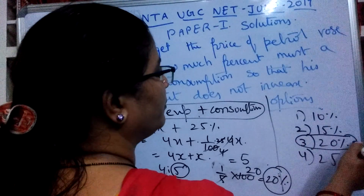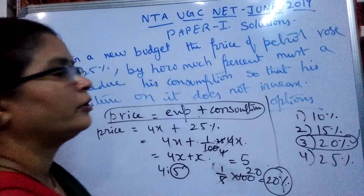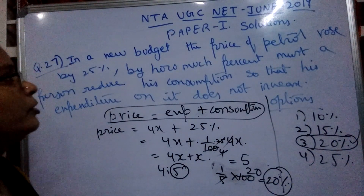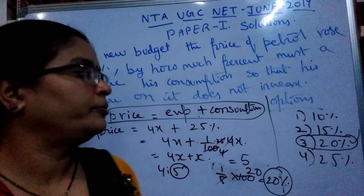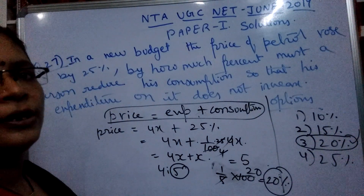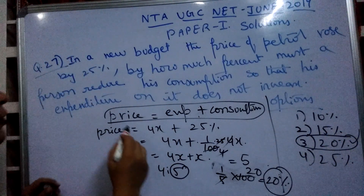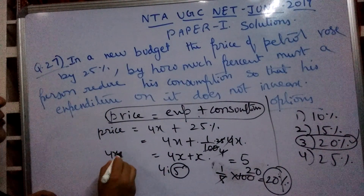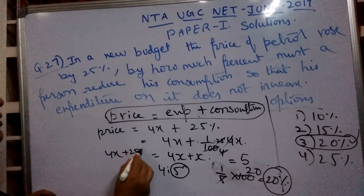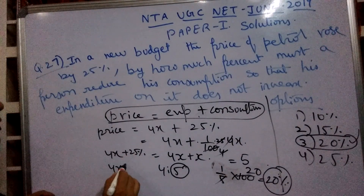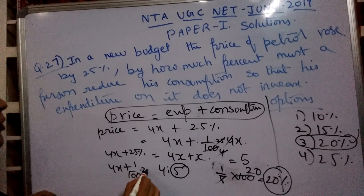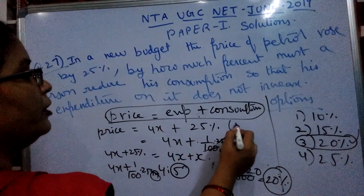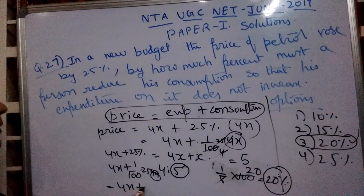We convert this to a percentage: (1/5) × 100 = 20. So 20% is the reduction in consumption required so that his expenditure does not increase. Option 3, 20%, is the correct answer for this question.